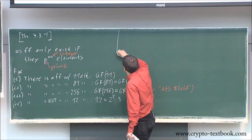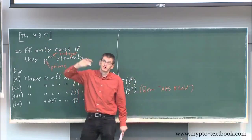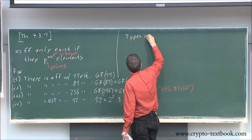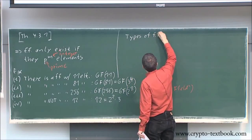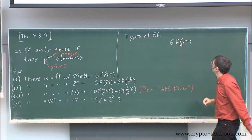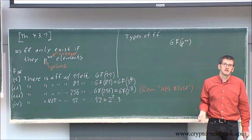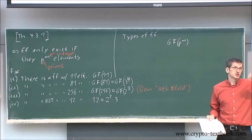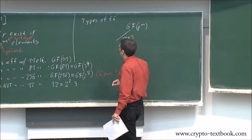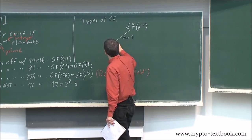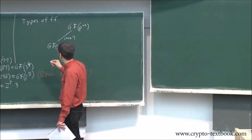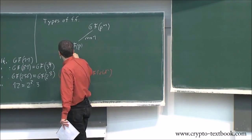From this definition — and this is a very important theorem — we can distinguish between two types of finite fields. They all must have the form GF(p^m), that is, a prime raised to an integer power. Now we distinguish between two cases: the special case M equals one, meaning we are talking about fields GF(p), and the correct name for those fields are prime fields.